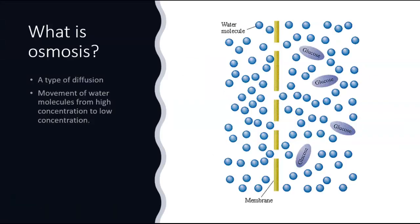Osmosis is a type of diffusion. It is specifically the movement of water molecules. And just like other molecules, water molecules will move from areas of high concentration to areas of low concentration.